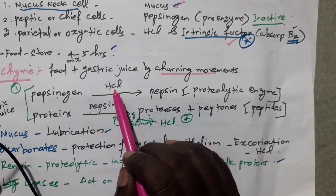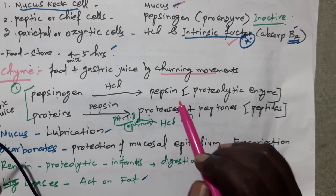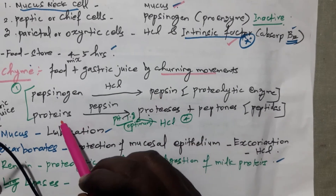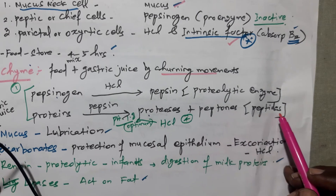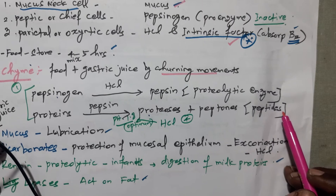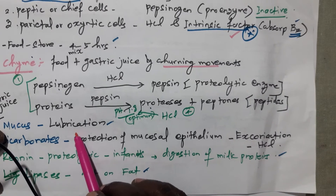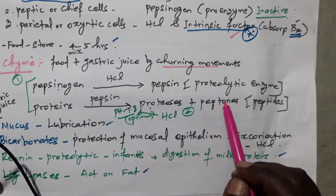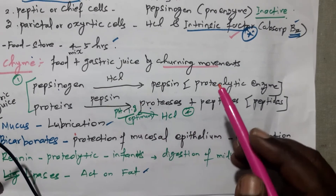First is pepsinogen. Pepsinogen is acted upon by HCl and converted into pepsin. Pepsin is the active form, otherwise called a proteolytic enzyme. Pepsin acts on proteins, dividing them into proteoses and peptones — peptones are otherwise called peptides. Second is mucus, secreted from the gastric glands, which is helpful for lubrication. During digestion of proteins into proteoses and peptones, HCl gives an optimum pH of 1.8.